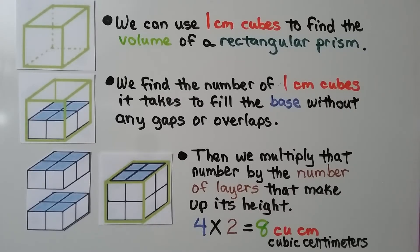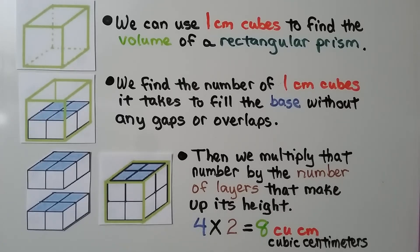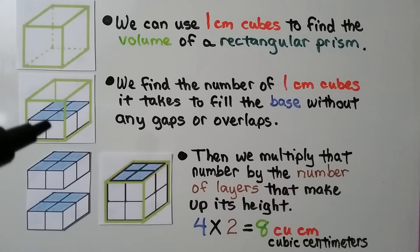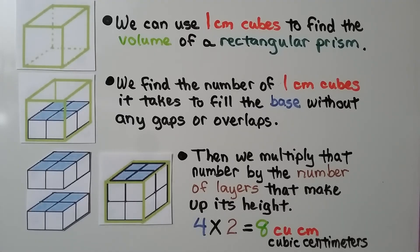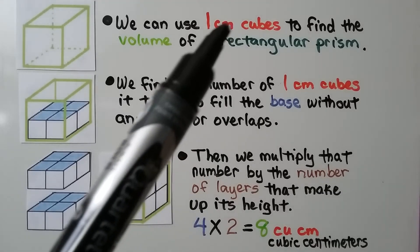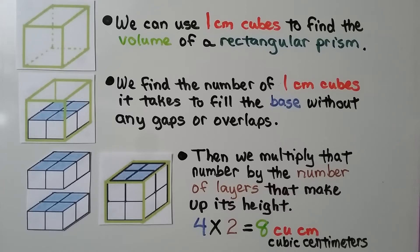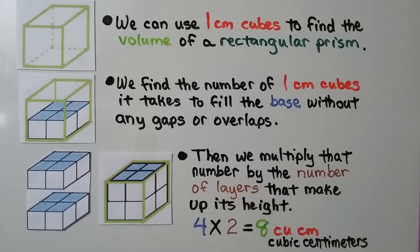We can use 1-centimeter cubes to find the volume of a rectangular prism. We find the number of 1-centimeter cubes it takes to fill the base without any gaps or overlaps, then multiply that number by the number of layers that make up its height. There are 2 layers and 4 cubes on the first layer. That's 4 times 2 layers, equal to 8 cubic centimeters. The volume of this rectangular prism is 8 cubic centimeters.